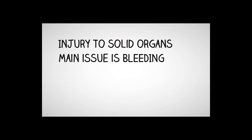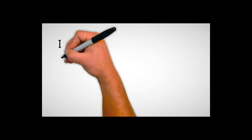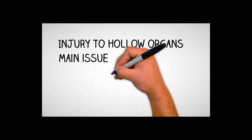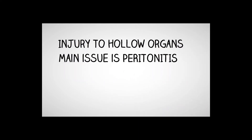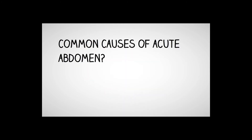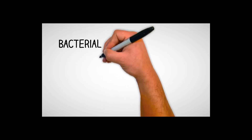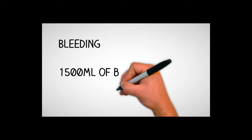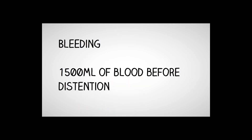Injury to solid organs — your main concern would be bleeding. You can bleed out, especially with things like your spleen or your liver. Injury to your hollow organs, you have to worry about issues like peritonitis. Common causes of acute abdomen include bacterial contamination, infection of the bowel or peritonitis, chemical irritation like leakage of blood or bile into the wrong space, peritoneal inflammation, trauma, and bleeding from solid organ laceration. The abdominal cavity can hold about 1,500 milliliters of blood before you even see any distension.